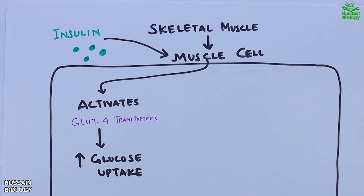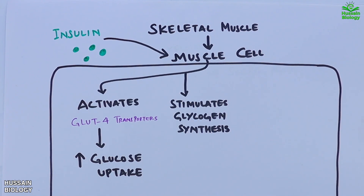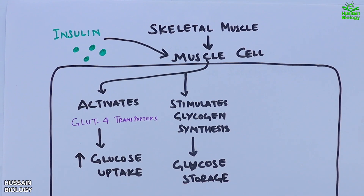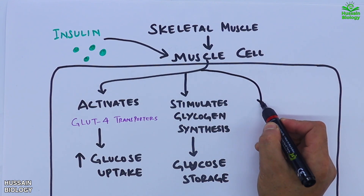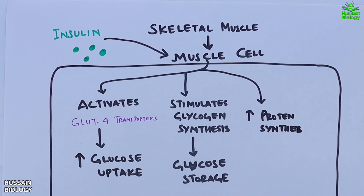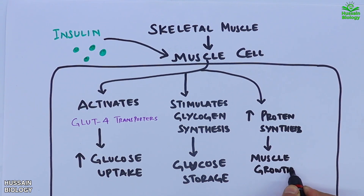Second is the stimulation of glycogen synthesis. Insulin promotes the conversion of glucose into glycogen, which is stored in the muscle for energy purposes. This process is crucial for maintaining energy reservoirs in our muscles. Third is the enhancement of protein synthesis — insulin stimulates the synthesis of proteins, which are the building blocks of muscle, supporting muscle growth and repair.